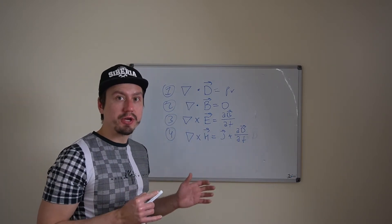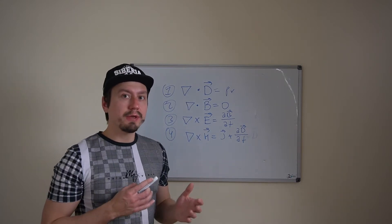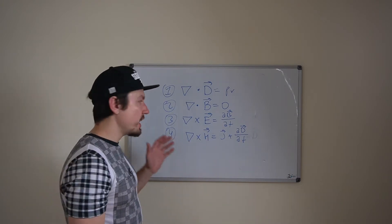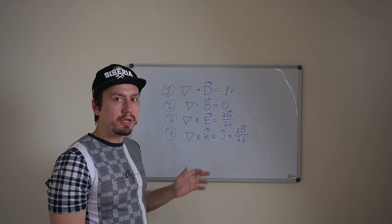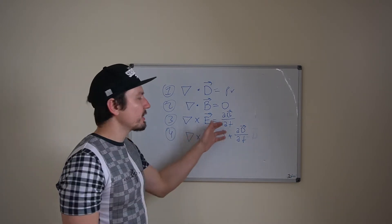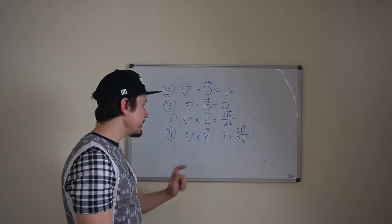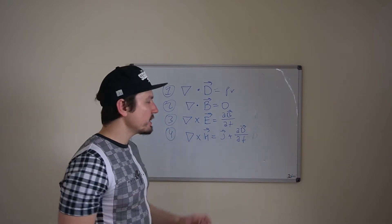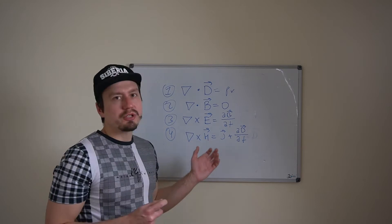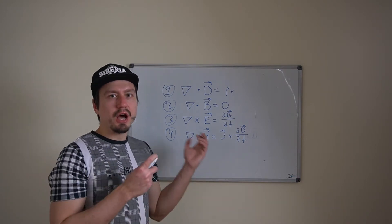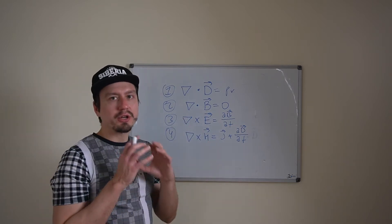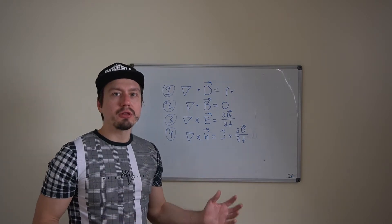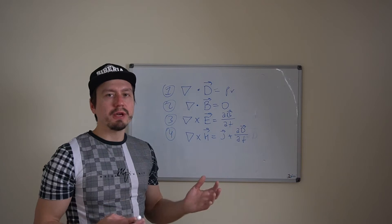The third and fourth Maxwell's equations tell us how electric fields create magnetic fields and how magnetic fields create electric fields. In the third law, the curl of the electric field is the rate of change in magnetic flux density. The curl of the magnetic field is the rate of change in electric flux density plus J, the electric current density — defined as charge passing through a conductor per surface area. These two equations are the conclusion of Michael Faraday's experiments.